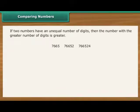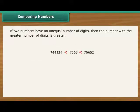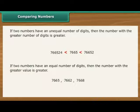If two numbers have an unequal number of digits, then the number with a greater number of digits is greater. If two numbers have an equal number of digits, then we need to compare numbers at each position.